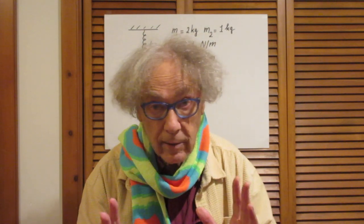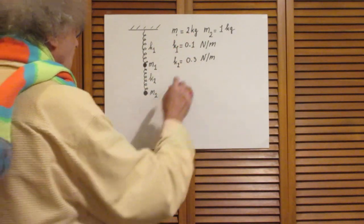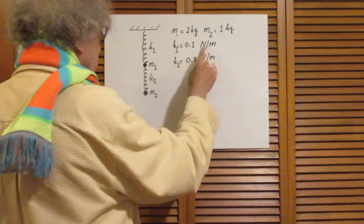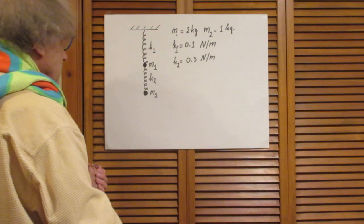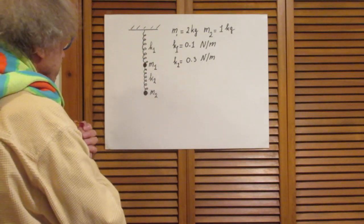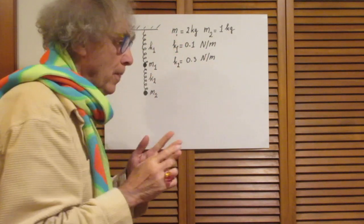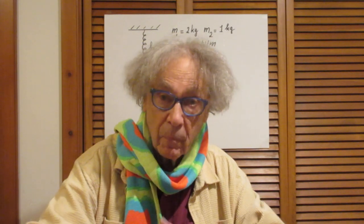I will call f-plus the highest frequency and f-minus the lowest frequency. I would like you to give me those frequencies in hertz, with three-digit precision. Here are the parameters: m1 is one tenth of a kilogram, m2 is also one tenth of a kilogram, k1 is one tenth of a newton per meter, and k2 is three tenths of a newton per meter. Note that this drawing is really not to scale — it's just a sketch.